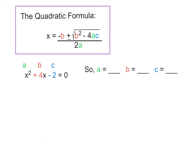Where do those a, b, and c values come from? They come from the equation we're trying to solve. The first thing you have to make sure to do is that the equation equals 0 — we're finding the x value when y equals 0. We find a, b, and c by looking in front of x² for a, in front of x for b, and the standalone number for c.